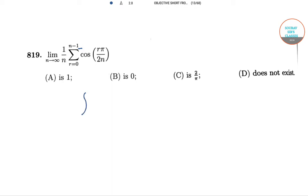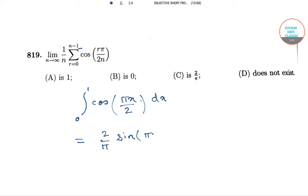The definite integration is from 0 to 1 of cos(πx / 2) dx, which is equal to 2 by π · sin(πx / 2), evaluated from 0 to 1, which is equal to 2 by π. So our answer is option C.